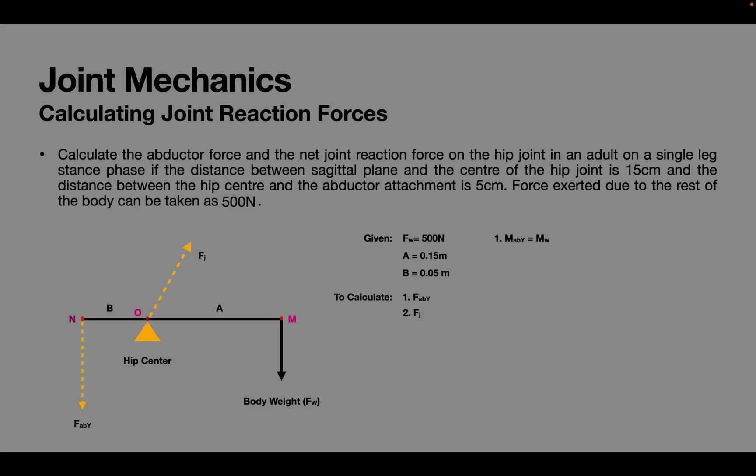Let's solve the first part of the problem. At equilibrium the moments are equal and therefore expanding the moments we get force due to abductor times its lever arm B is equal to force due to body weight times its lever arm A.